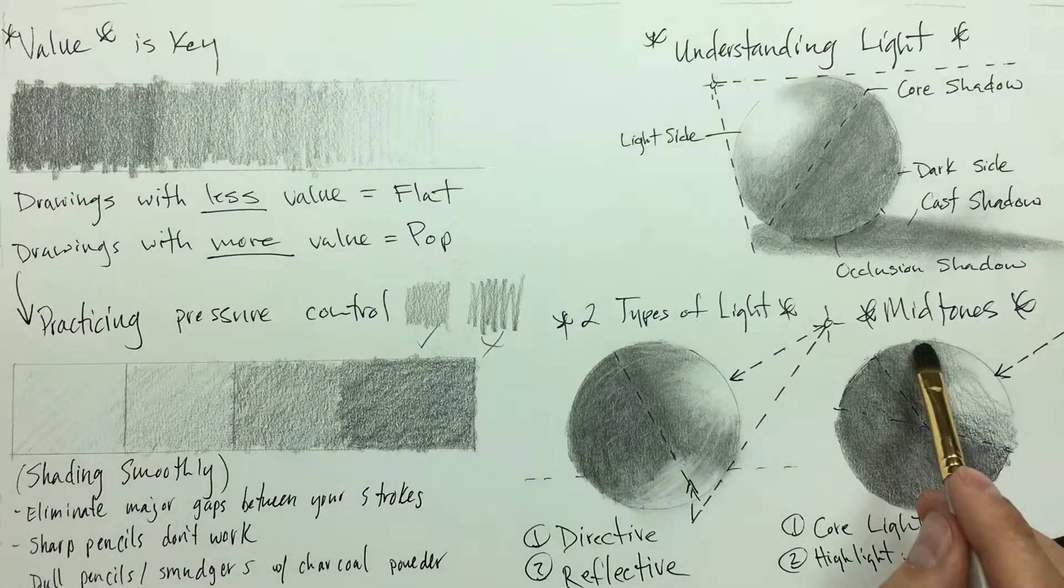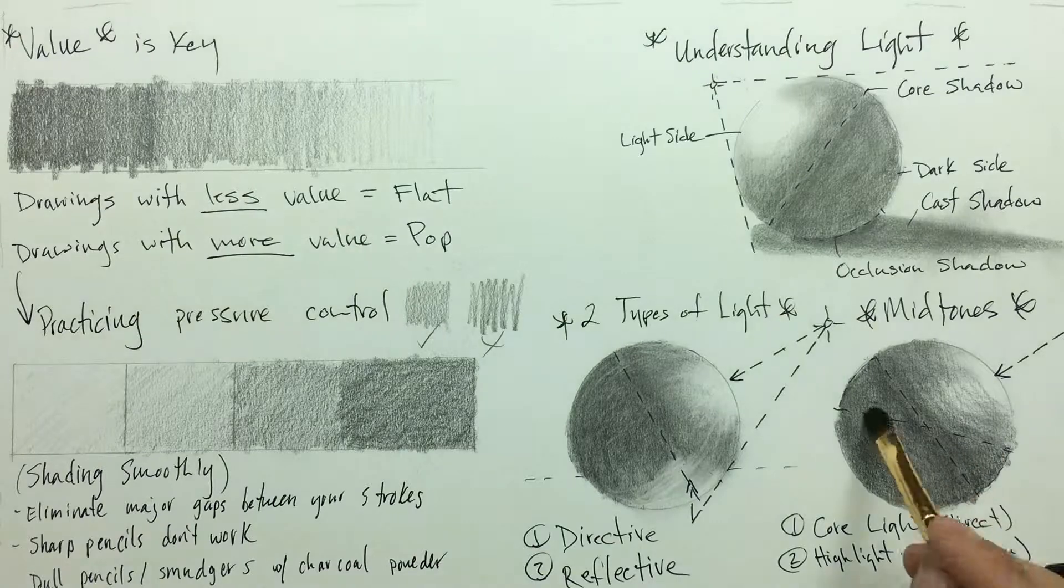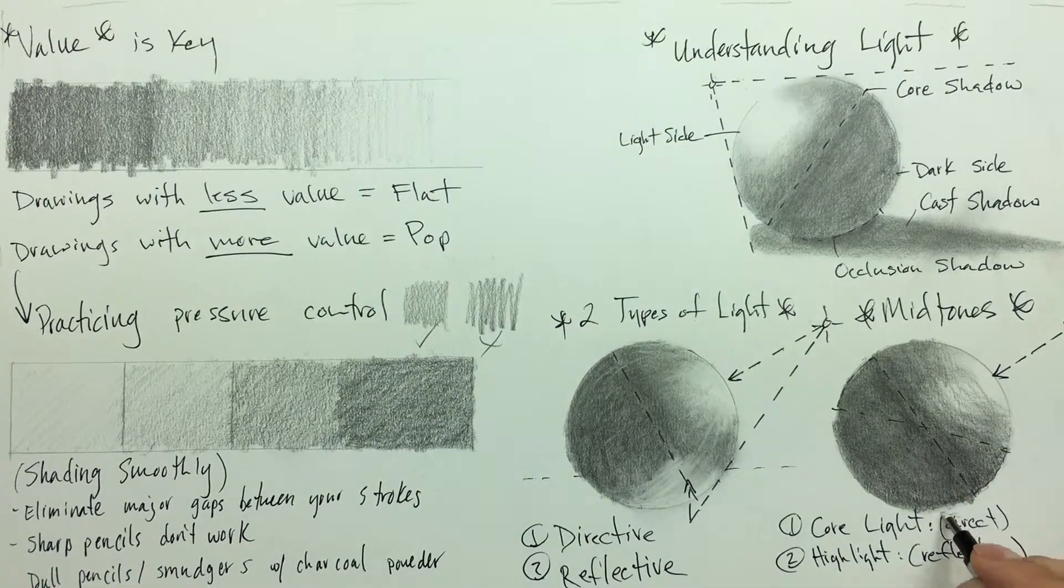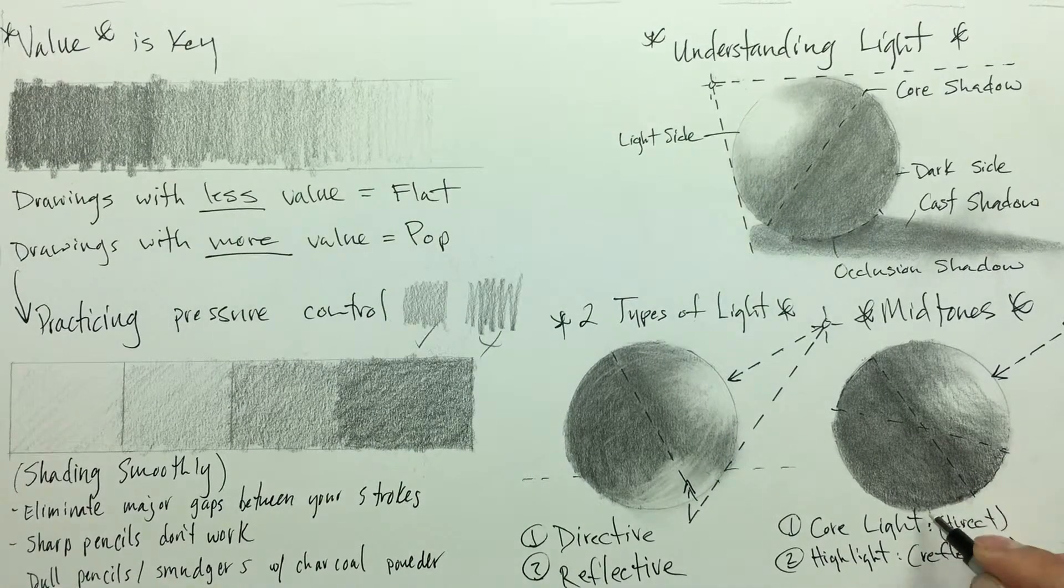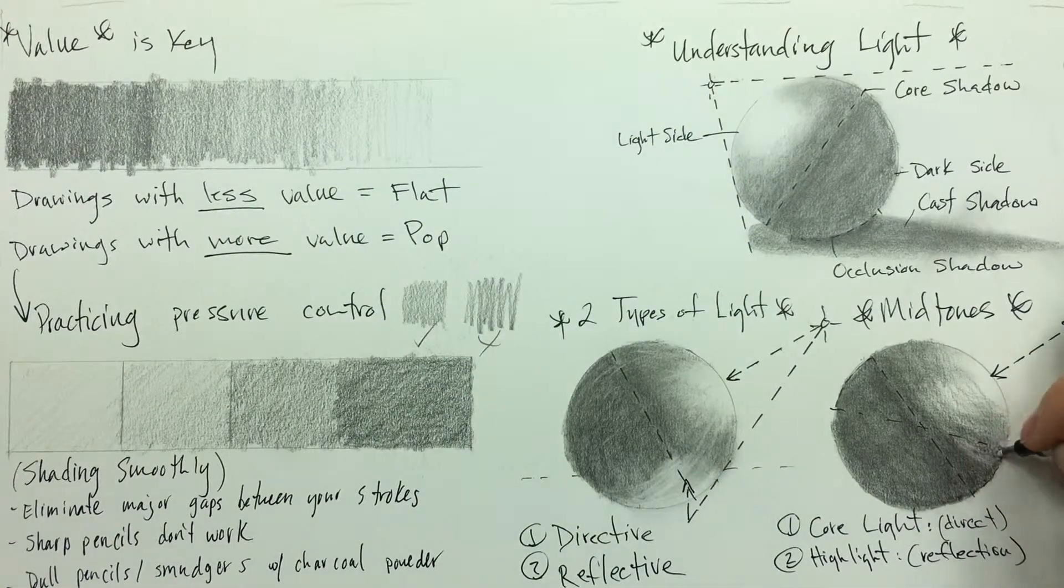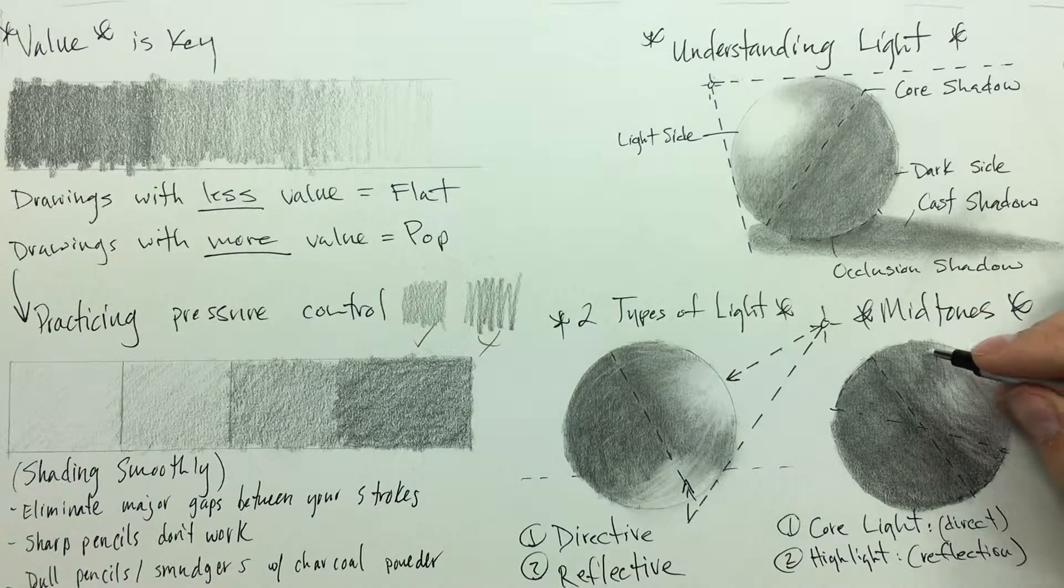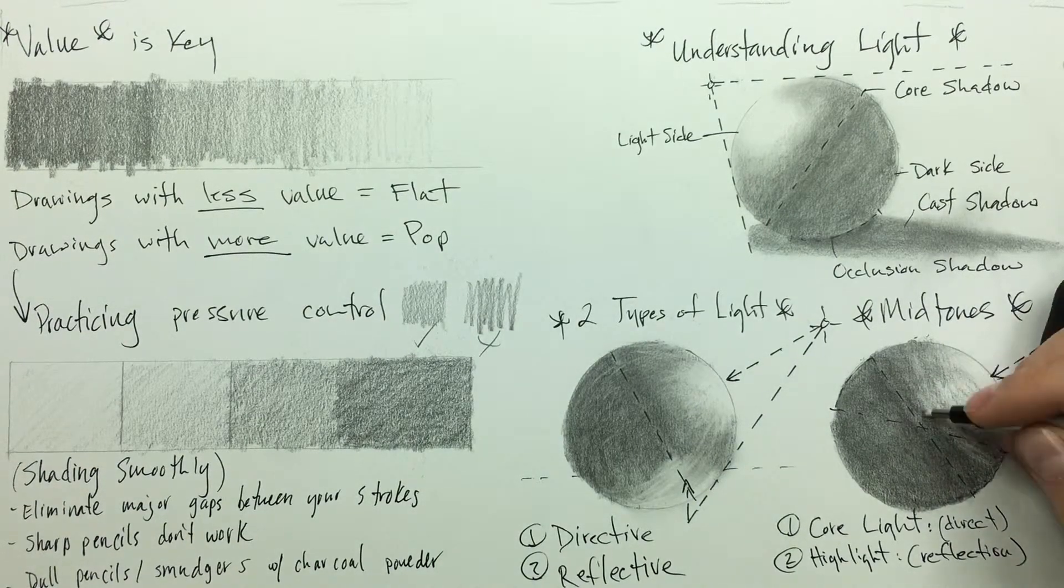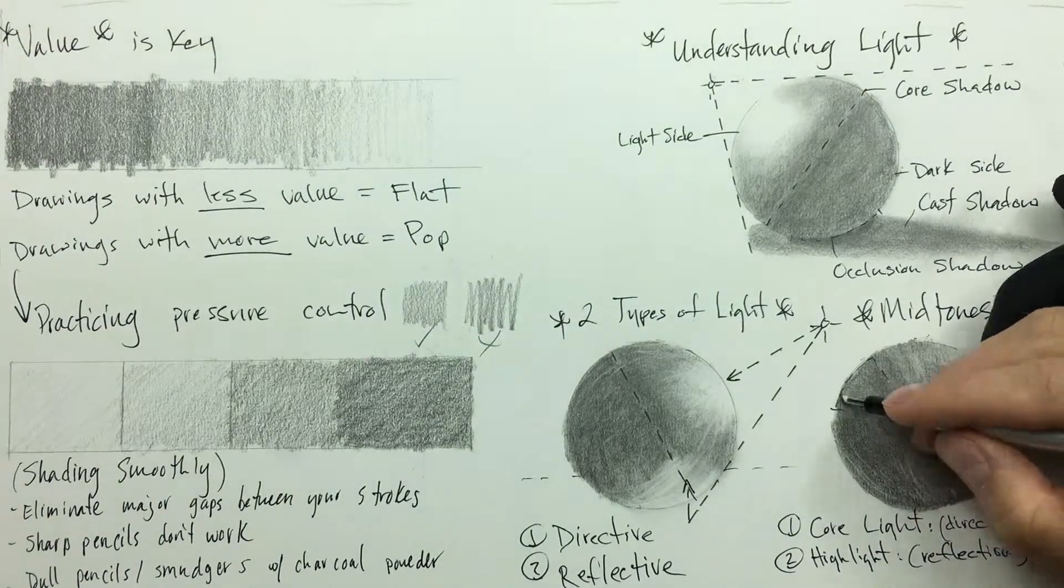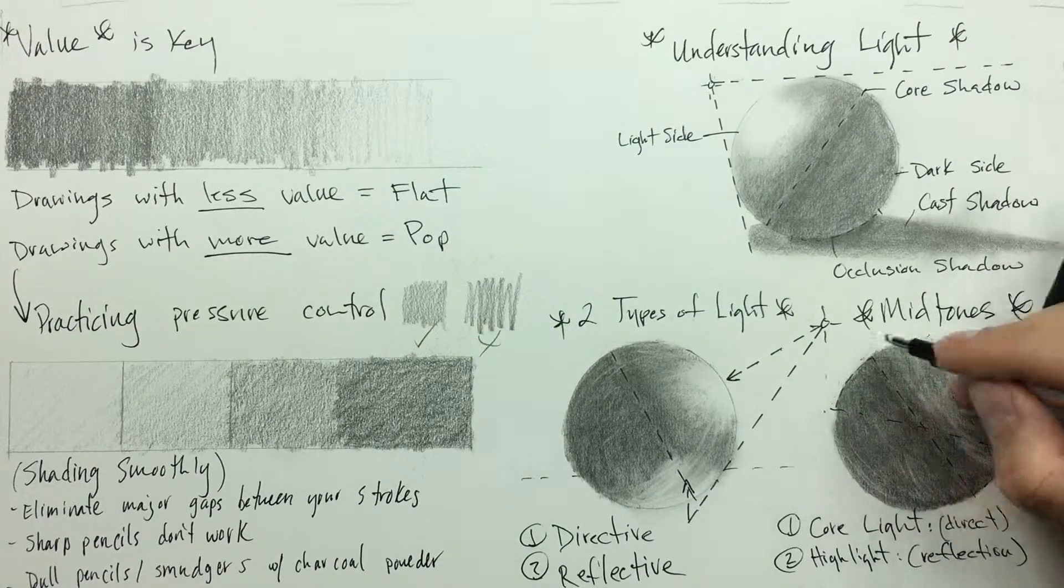Understanding principally what the core shadow is versus the cast shadow versus the occlusion shadow versus what's the light side, what's the dark side—you know, there's directive light, there's reflective light, there's core light, and then there's highlights in regards to midtones. Understanding these basic core principles of being able to shade will really enhance your own repertoire.